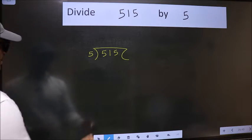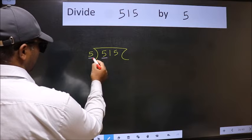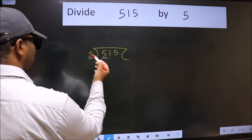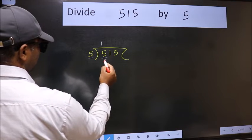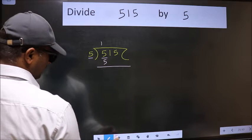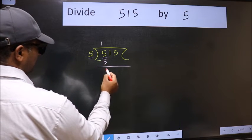Next, here we have 5. Here also 5. When do we get 5 in the 5 table? 5 once is 5. Now we should subtract. We get 0.